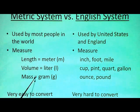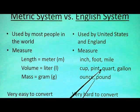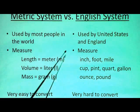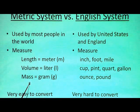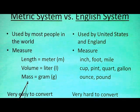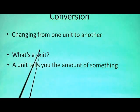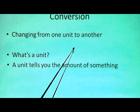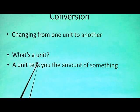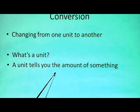In the metric system it's easy to convert, but in the English system it's harder because these relationships are not always the same. In the metric system, the units are always different by a power of ten — that is, either ten, a hundred, or a thousand times greater or less. Remember, a conversion is changing from one unit to another. A unit tells you the amount of something that you have.